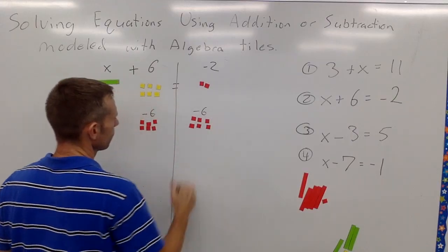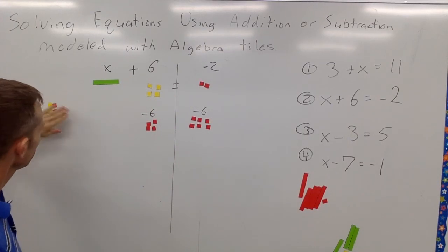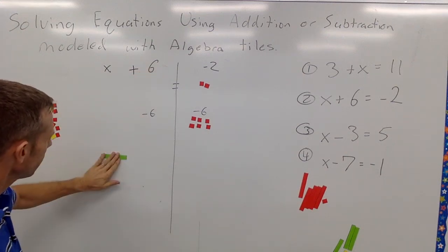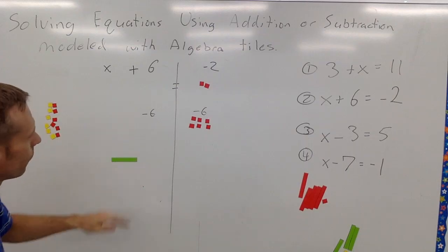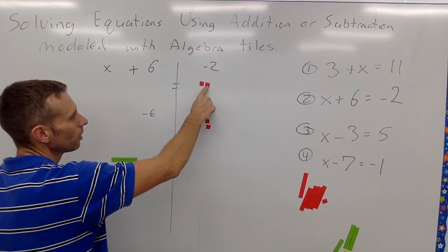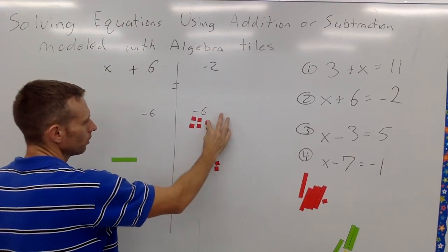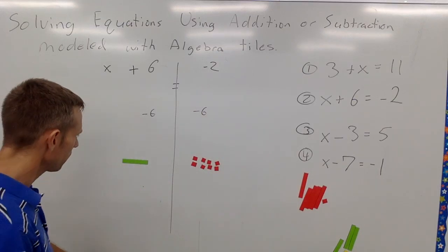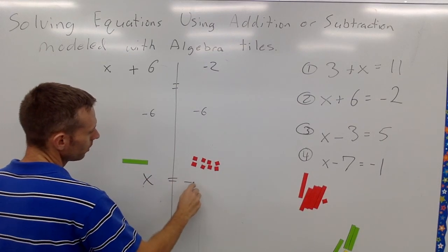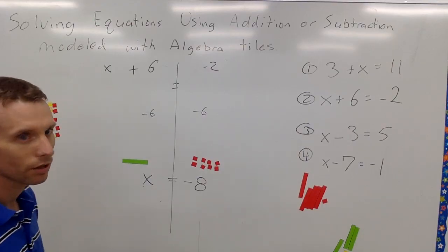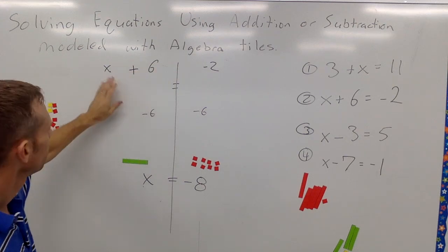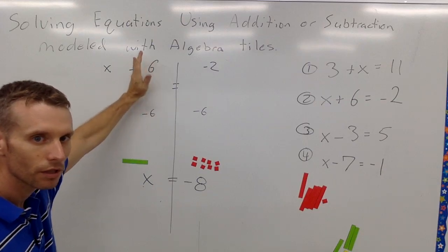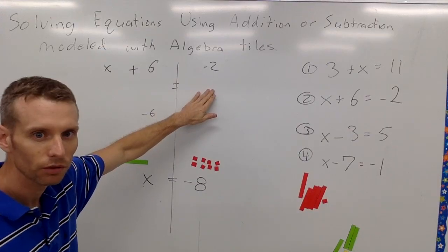The six positives and six negatives cancel out — six minus six is zero — leaving X by itself on the left. On the right, negative 2 and negative 6 don't cancel; they get combined: negative 2 plus negative 6 equals negative 8. So X equals negative 8. We can check: substituting negative 8 for X gives negative 8 plus 6, which is negative 2. Negative 2 equals negative 2 ✓.